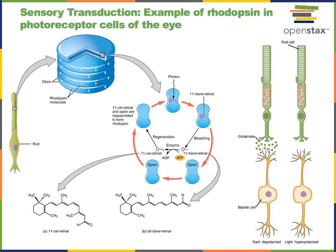Sensory receptors are cells that monitor the internal and external environment. A sensory receptor has a receptive field, which is the region of the environment that is monitored by that sensory receptor. A specific example shown in this illustration is a rod, a type of photoreceptor found in the eye. A region of your visual field corresponds to the receptive field for an individual rod photoreceptor.